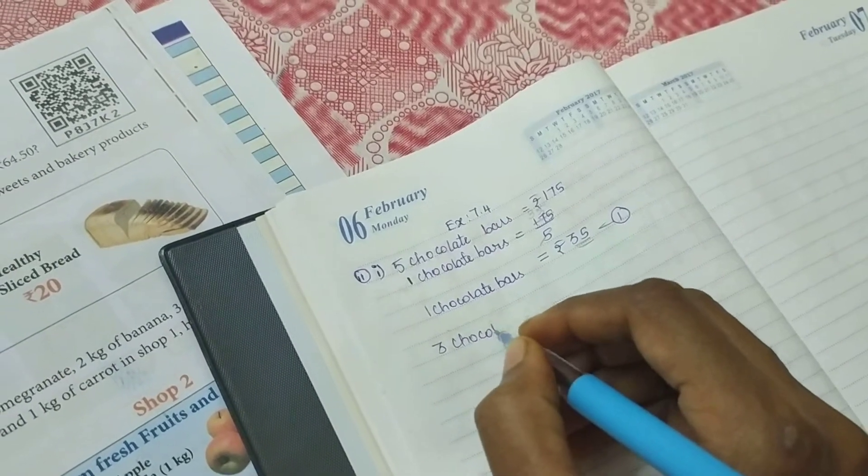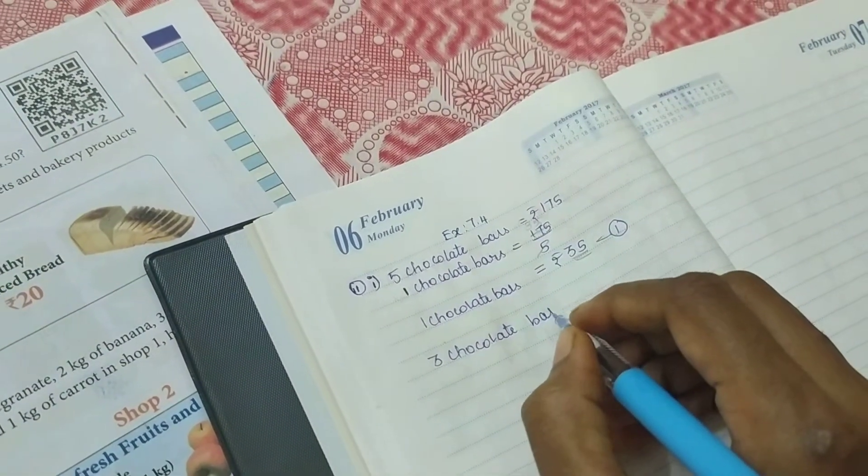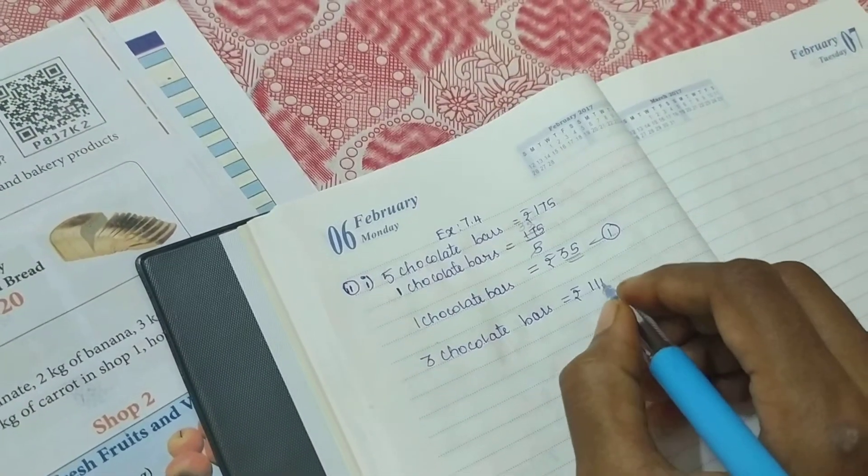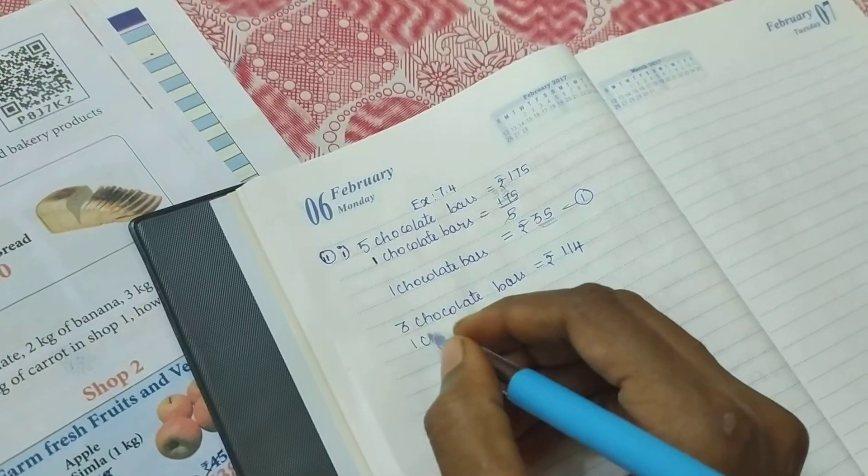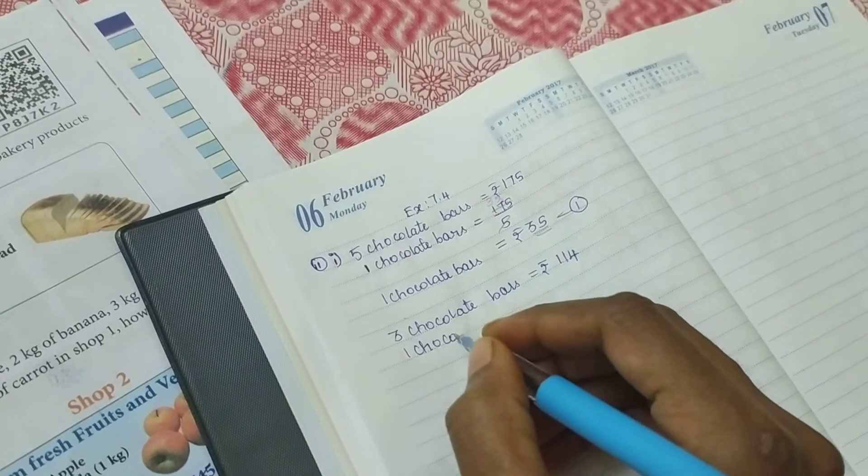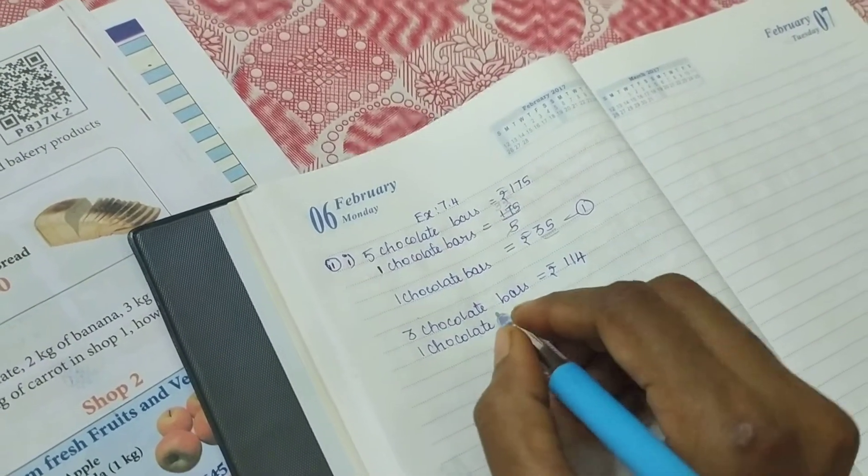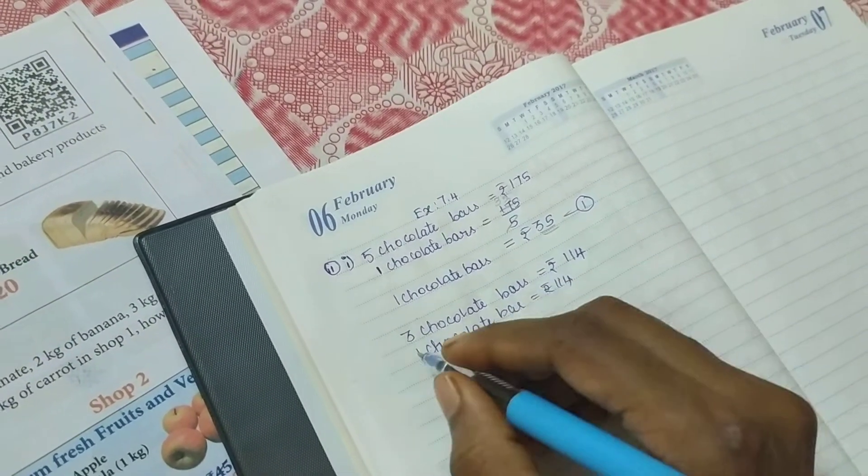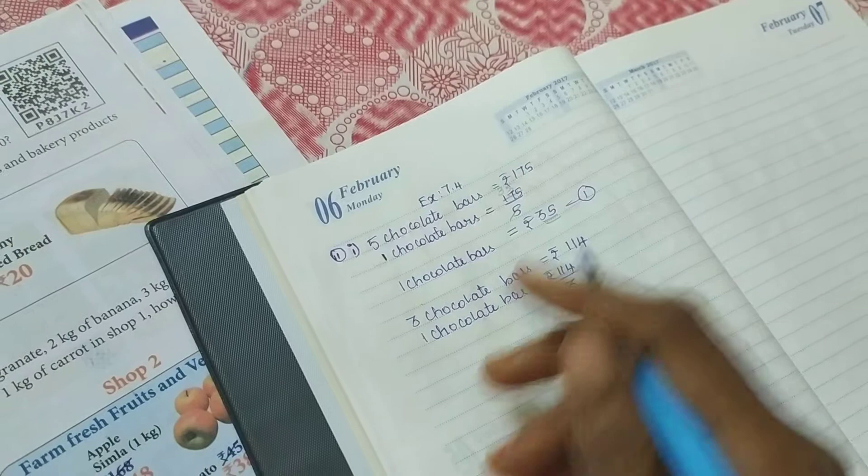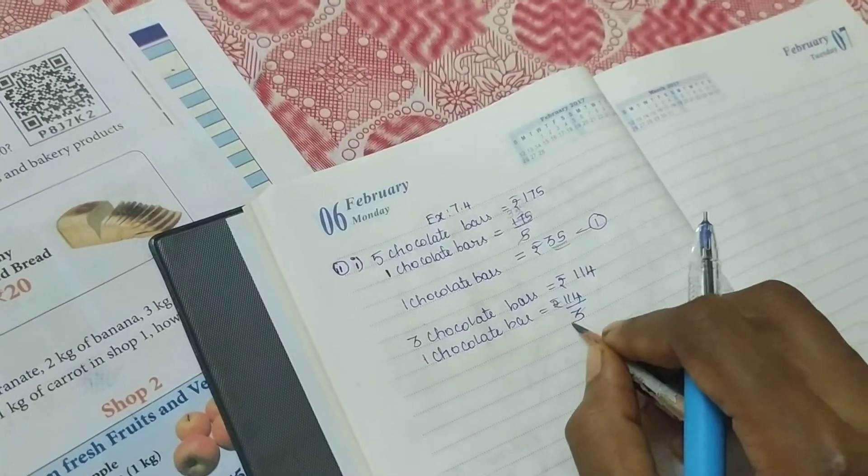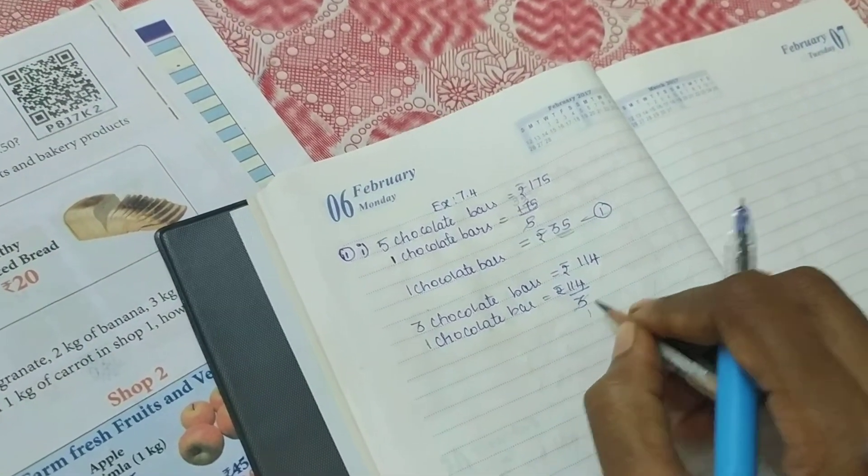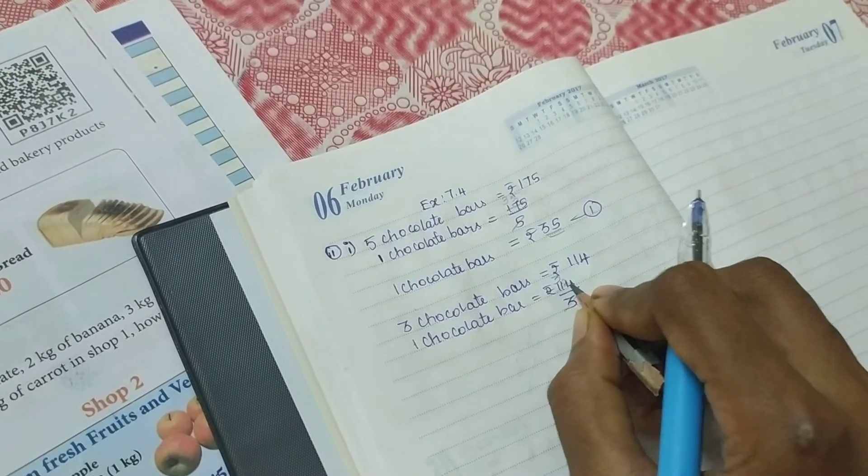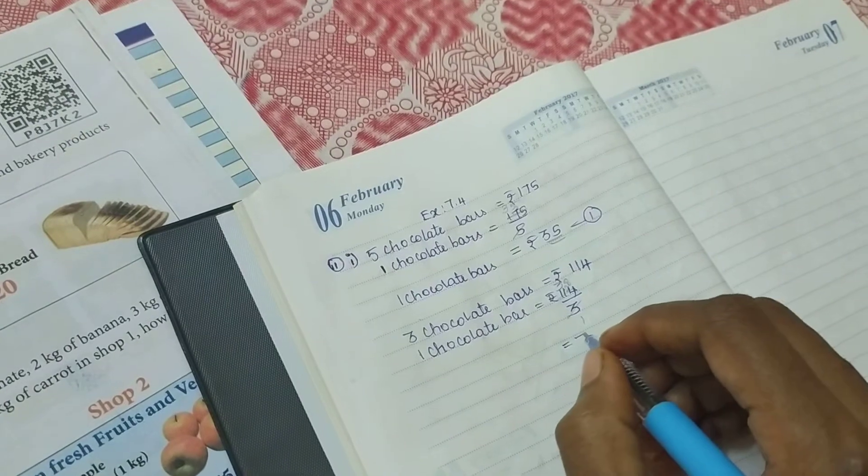Now for the second package: three chocolate bars for rupees 144. One chocolate bar equals 144 divided by 3. Canceling by 3: 24 divided by 8. So one chocolate costs 48 rupees.